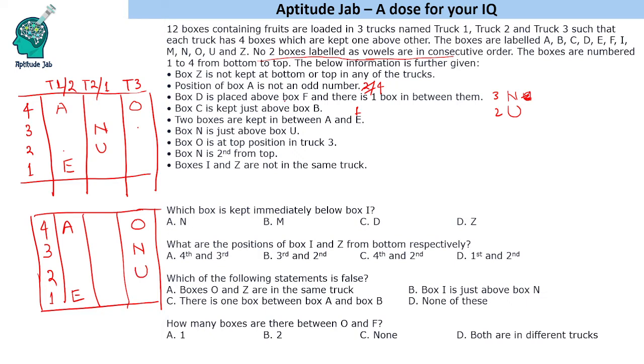D is placed above F and there is one box in between them. So D is above F and one box in between. So D one box and then F. Now in this case D and F are not possible here. They are not possible here. So only possibility is D and F. Now in this case D and F will come in this column because there has to be gap of one box between D and F.